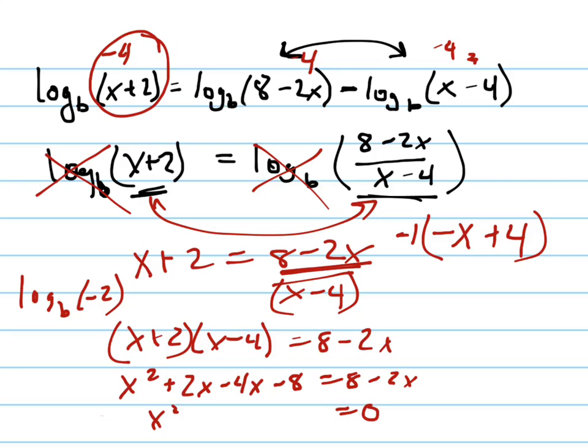So the x squared term is going to be gone, or the x term is going to be gone, and it's going to be minus 16. So x squared minus 16 equals 0, which means x equals plus or minus 4.